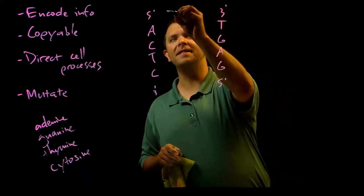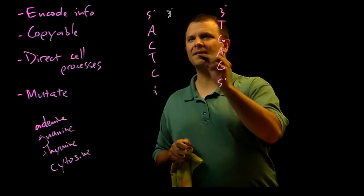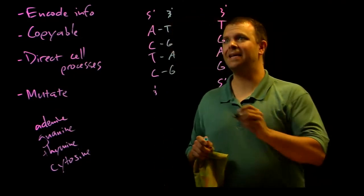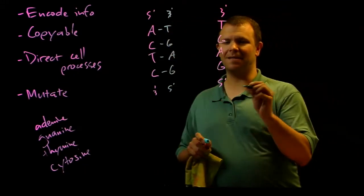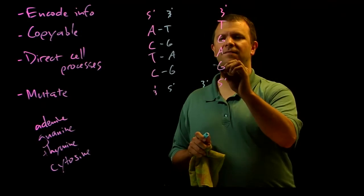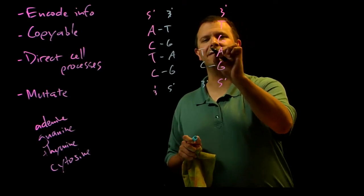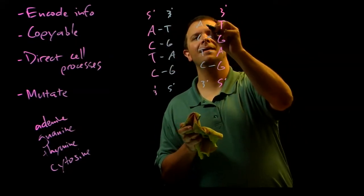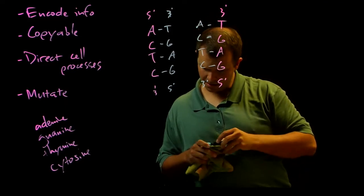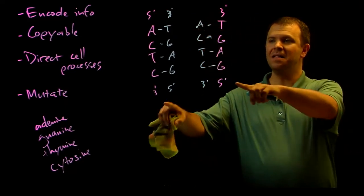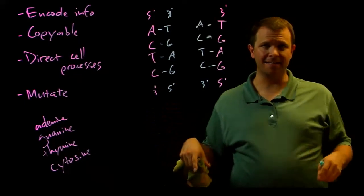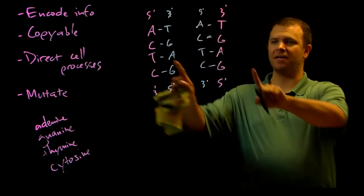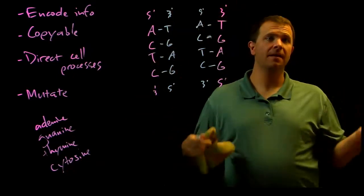And so an enzyme can come along on this strand and it can fill in a thymine, a guanine, an adenine, and a guanine. And that same enzyme can come in on this strand and fill in a cytosine and an adenine. The two initial strands both serve as templates for newly synthesized strands. And now where you started with one molecule, now you've got two.